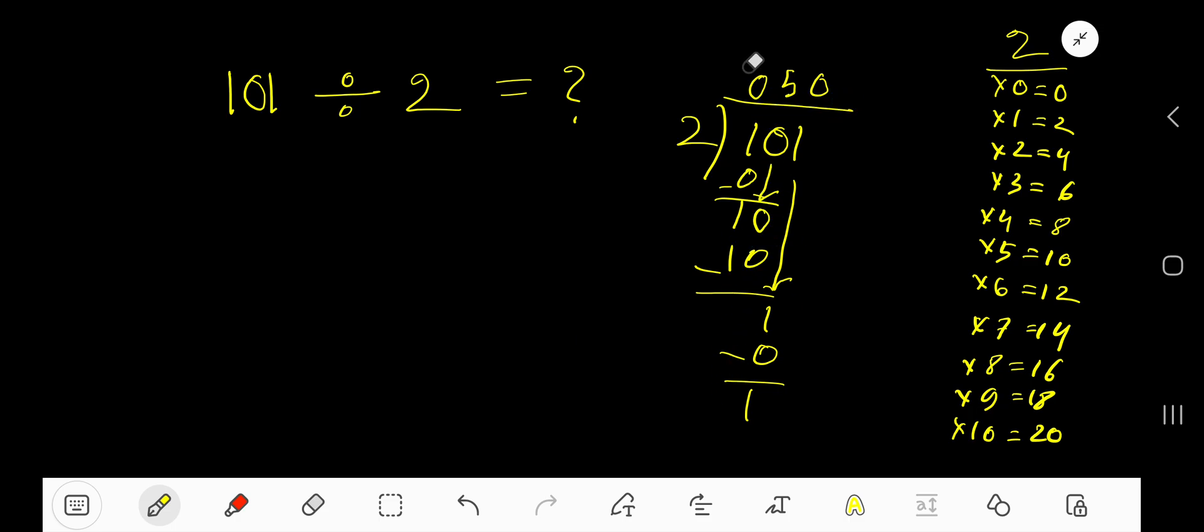So our answer is 050. If you don't have any value, 50, that is 50 remainder 1.